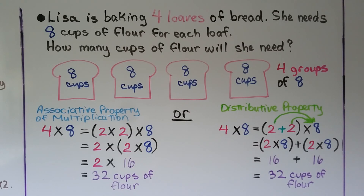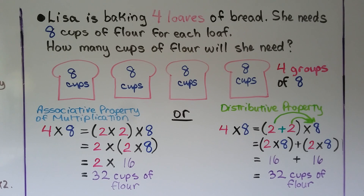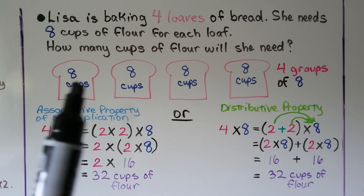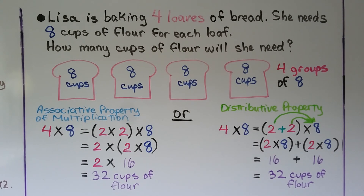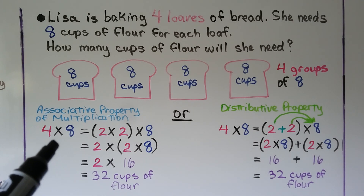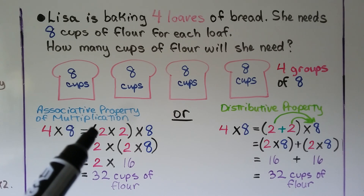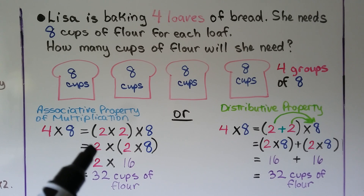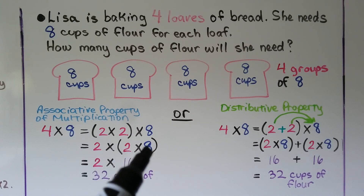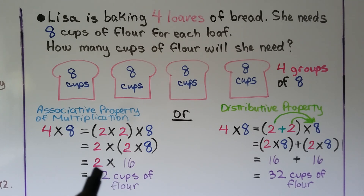Lisa is baking 4 loaves of bread. She needs 8 cups of flour for each loaf. How many cups of flour will she need? That means we have 4 groups of 8, which is 4 times 8. Using the associative property, we break apart the 4 into a 2 times 2 and change the grouping to 2 times (2 times 8). We do the parentheses first: 2 times 8 is equal to 16. Then we multiply by this 2, and 2 times 16 is equal to 32 cups of flour.